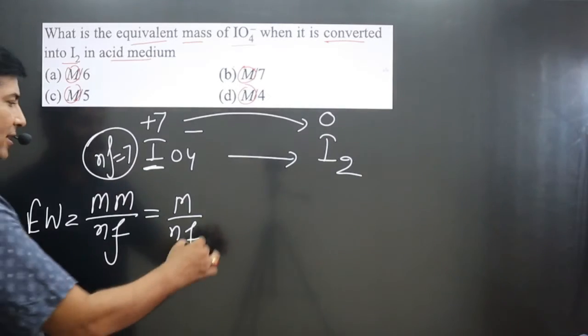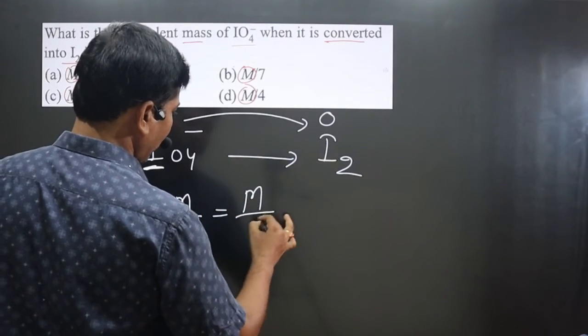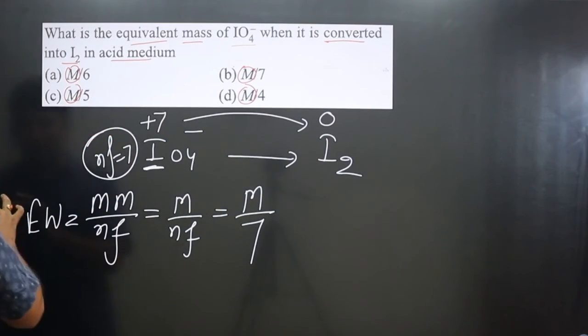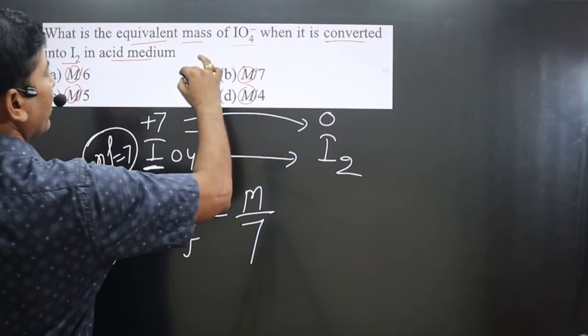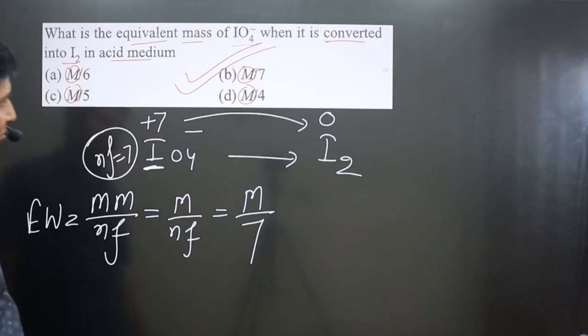7, so the answer is molecular mass divided by 7. Looking at the options, option B is correct: M/7.